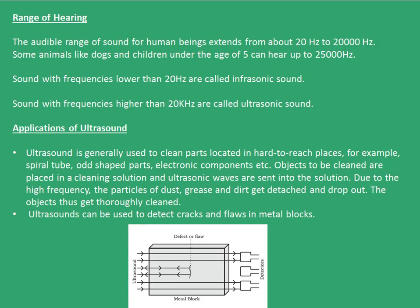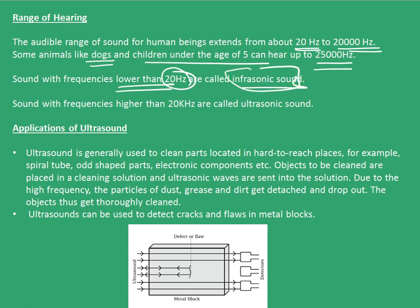Moving forward, let's see range of hearing. The audible range of sound for human beings extends from about 20 Hz to 20,000 Hz. Some animals like dogs and children under the age of 5 can hear up to somewhere around 25,000 Hz. Sounds with frequencies less than 20 Hz are called infrasonic sounds, and sounds with frequencies higher than 20 kHz are known as ultrasonic sound.